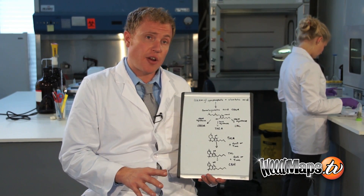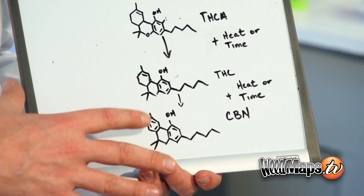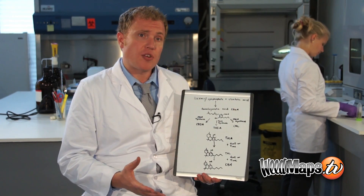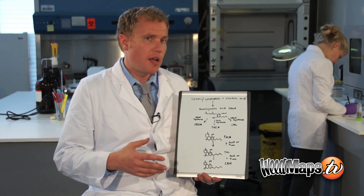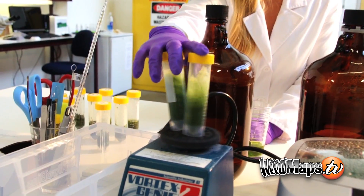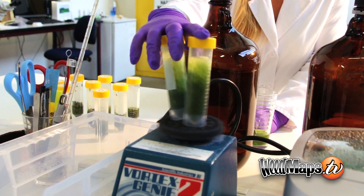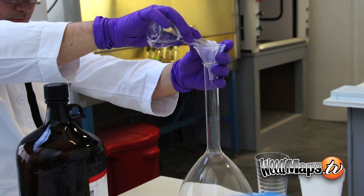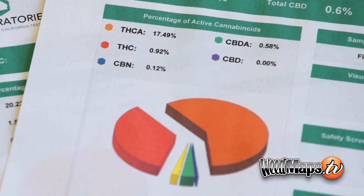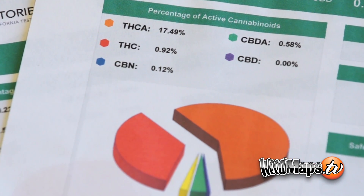That causes a weaker interaction for this compound with the CB1 and CB2 receptors. That weak interaction is what leads to the sedative effect and the drowsiness associated with CBN. When cannabis is tested in a testing facility, CBN can be measured, and usually it's under 1%. A patient can actually look to see if that's something they're interested in — a higher or lower percent — because it does cause sedation.